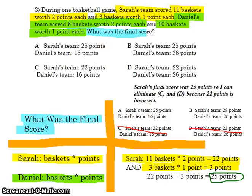I can eliminate C and D because both say that Sarah's team made 22 points, which is incorrect. Notice that assessments sometimes count on students solving only one part of the problem and stopping there. Yes, 22 points is a correct intermediate answer, but her team also made additional points. You have to work out the whole problem before eliminating answers. We confirmed Sarah's team made 25 points and eliminated C and D.